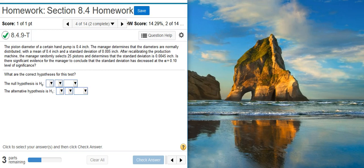The piston diameter of a certain hand pump is 0.4 inch. The manager determines that the diameters are normally distributed, with a mean of 0.4 inch, and a standard deviation of 0.005 inch. After recalibrating the production machine, the manager randomly selects 25 pistons and determines that the standard deviation is 0.0045 inch. Is there significant evidence for the manager to conclude that the standard deviation has decreased at the alpha equals 10% level of significance?